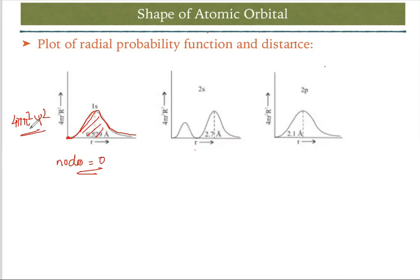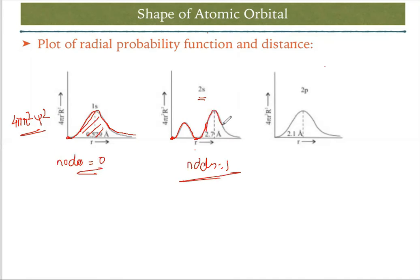For 2s with 4πr²ψ² on the y-axis, there is 1 node. The graph starts from the origin, goes up, touches the x-axis once, then goes up again with a higher amplitude loop and meets at infinity. For 2p, nodes = 2 − 1 − 1 = 0, so it starts from the origin, goes up, and meets at infinity.